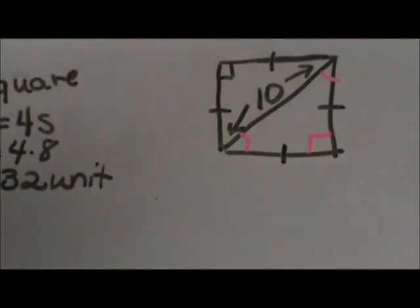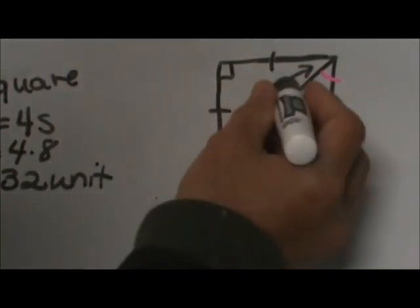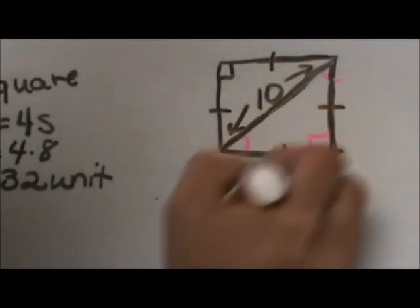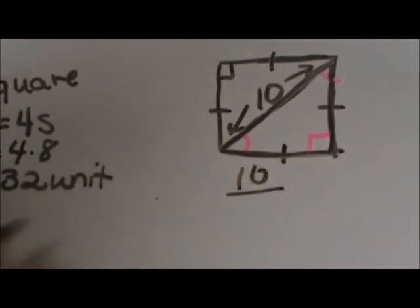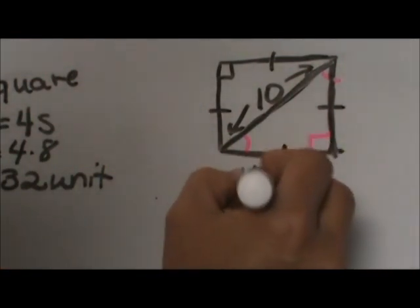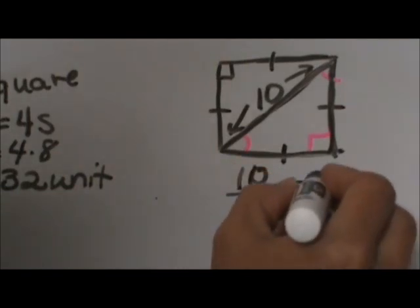We have to use the 45-45-90 rule to figure out the length of the side. So to go from the hypotenuse of this right triangle that I am highlighting, you are going to divide 10 by the square root of 2. That is the formula. So divide 10 by the square root of 2.